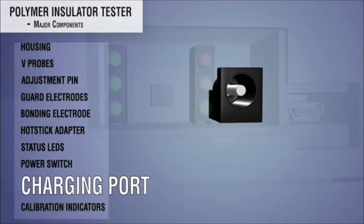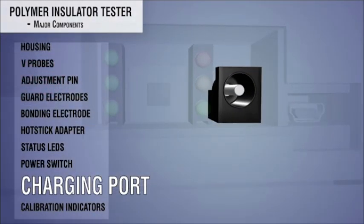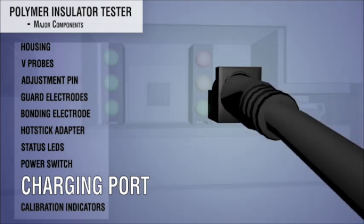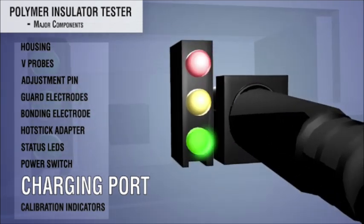Charging port and charger: A charger is used to charge the internal rechargeable battery. Smaller red, green, and yellow LEDs are located next to the charging port and are used to indicate charging status.